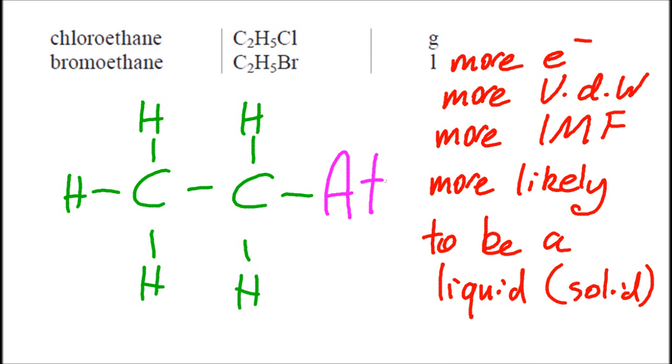Now, you could argue that the dipole is also important here, but chlorine has the biggest dipole in that molecule, and yet it has the lowest boiling point. It's a gas. And bromine has a smaller dipole, and yet that has the higher boiling point. So the dipole can't be as important as the van der Waals, which is unusual because normally van der Waals is the weakest.